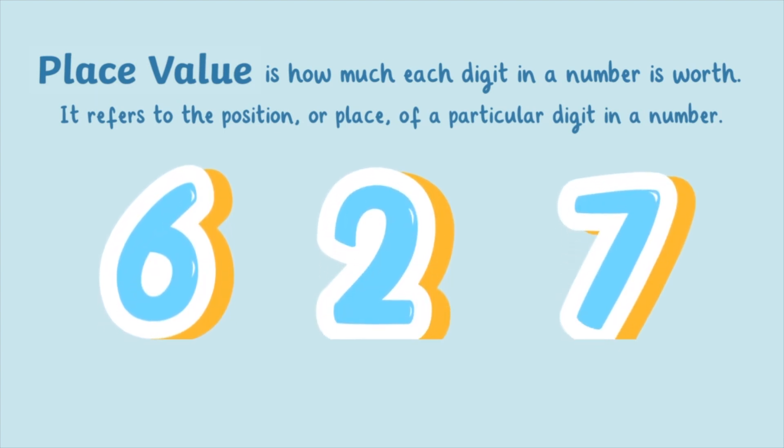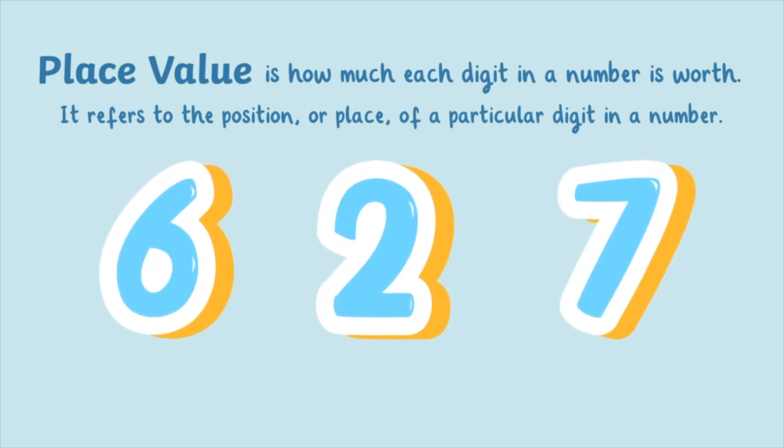For example, the number 627 is made up of 600, 20, and 7, or 6 hundreds, 2 tens, and 7 ones.